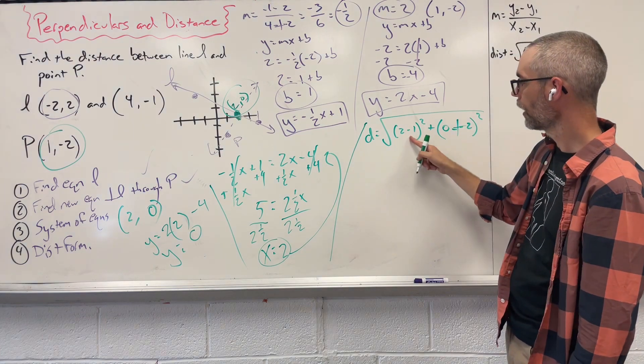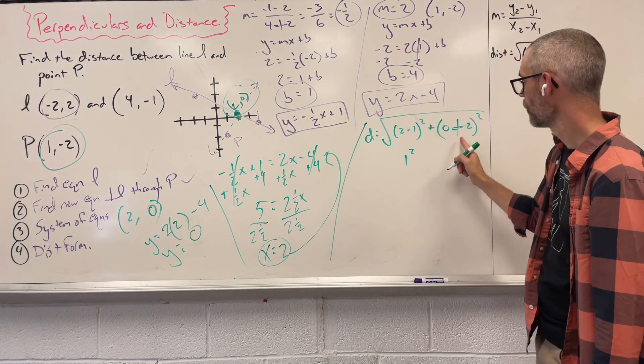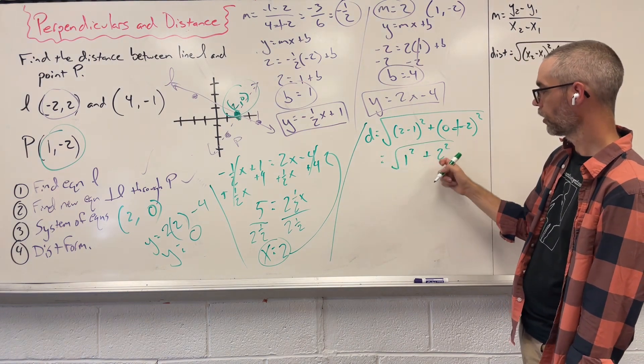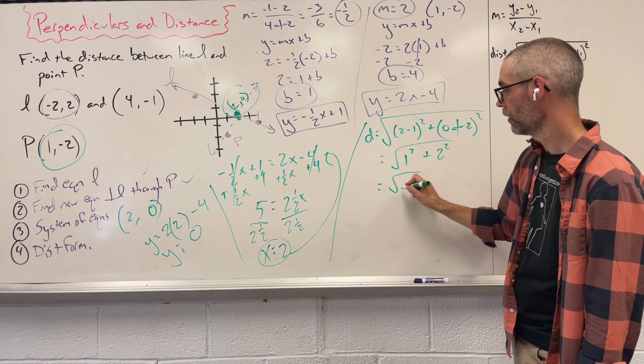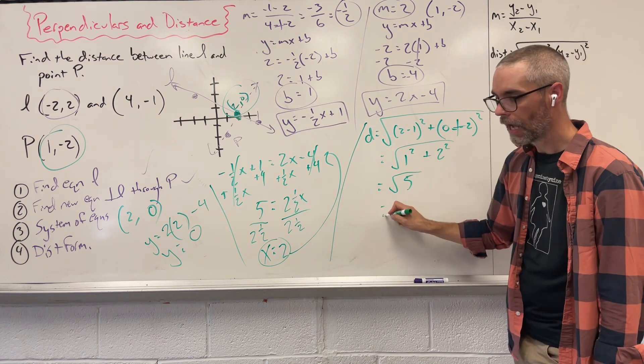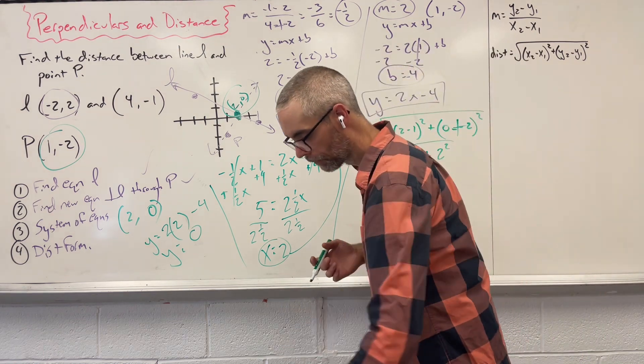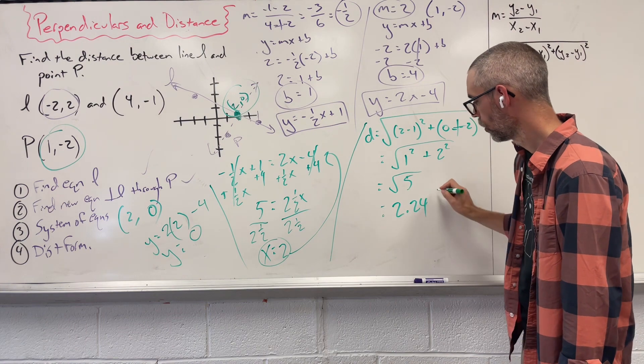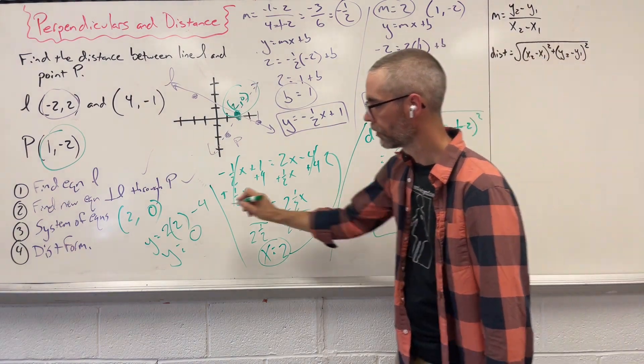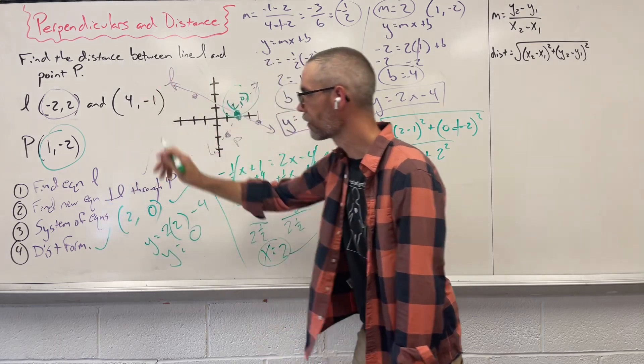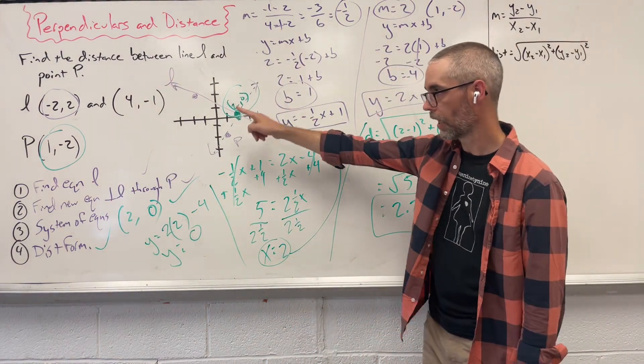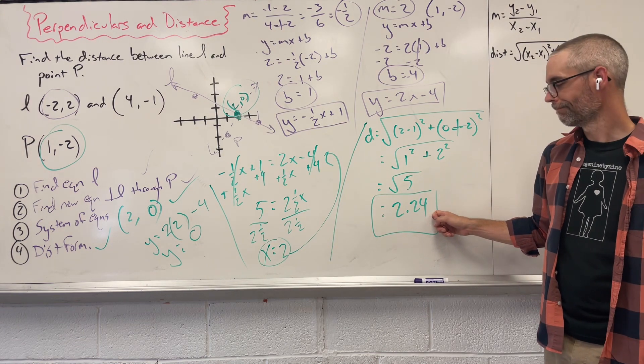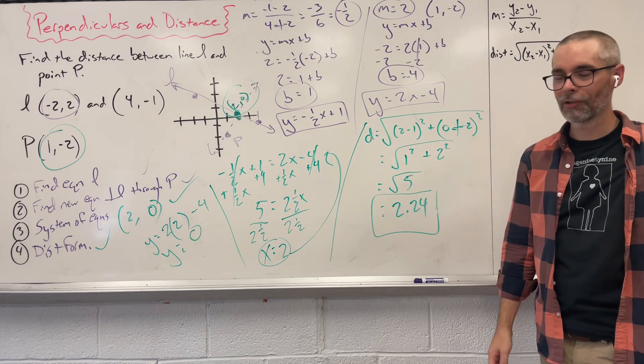We're left with 1 squared. On the other side, 2 squared, giving us 1 plus 4, which is 5. And 5, if we broke that down, gives us 2.24, about. Now, that is your last step. Our goal was to find the distance between this line and that point. It's a distance of 2.24. That's using perpendiculars and distances.